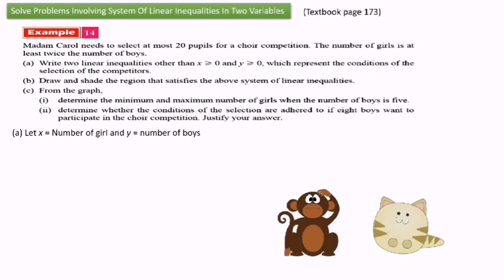Let x equal to number of girls and y equal to number of boys. For the first linear inequality, we look at the keyword 'at most.' At most means maximum — cannot be more than — so the symbol is less than or equal to. The linear inequality is x plus y less than or equal to 20.